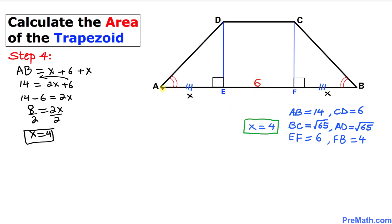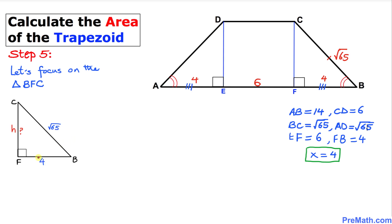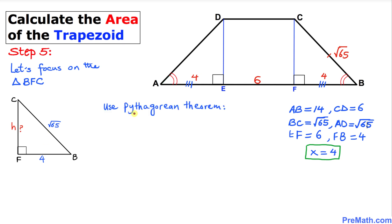X equals 4 means side AE is 4 units and side FB is 4 units as well. Now, the length of BC is square root of 65. In the next step, let's focus on right triangle BFC, where FB is 4 units, BC is square root of 65, and the height H is unknown.